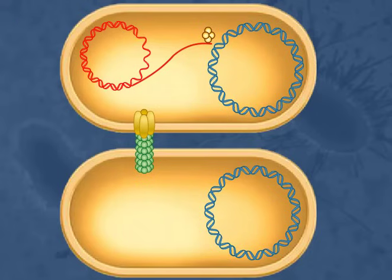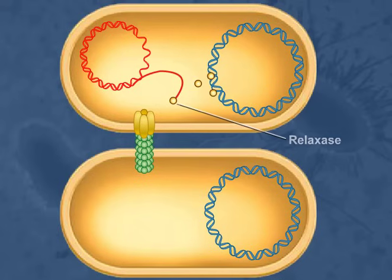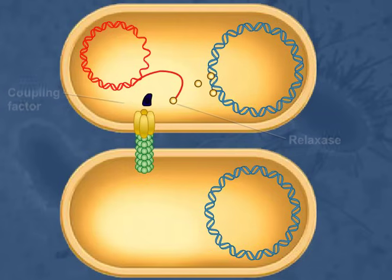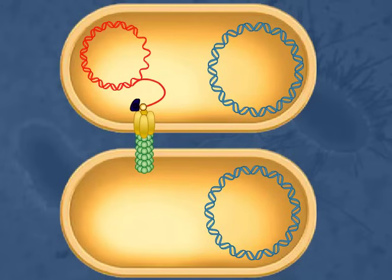Accessory proteins of the relaxosome are released, but a portion of the relaxosome called the relaxase remains attached to the T-DNA. This T-DNA relaxase complex is recognized by a coupling factor and transferred to the exporter, a complex in the F-plus cell that is contiguous with the pilus.